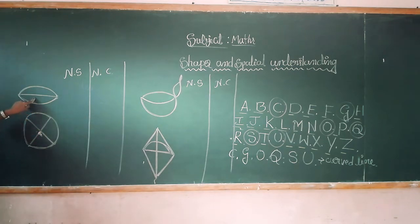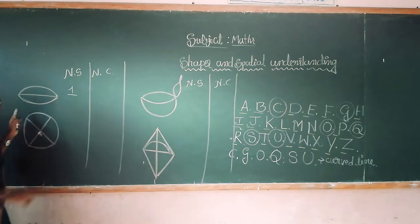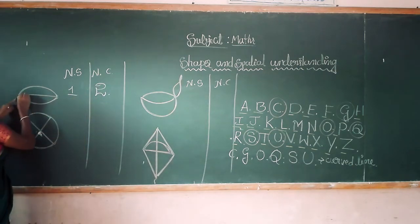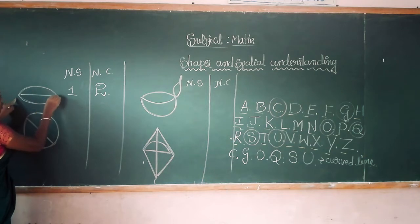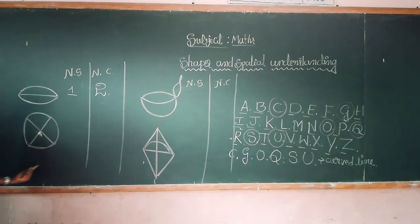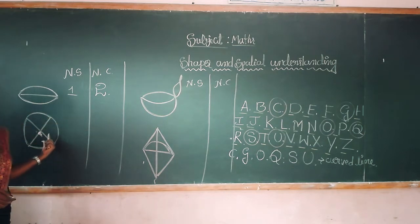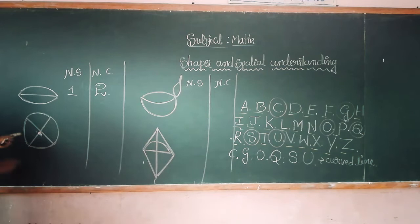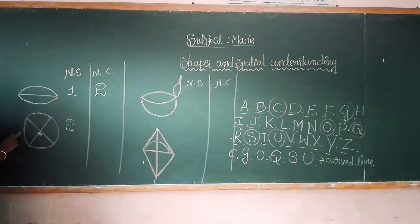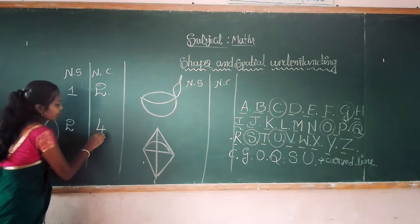Can you find out the number of straight lines in the picture? There is one straight line. Number of curved lines in this picture is one, two. So this is a straight line and this is called a curved line. Shall we go to the next picture?